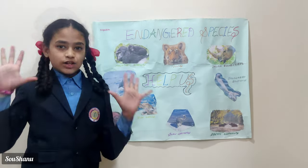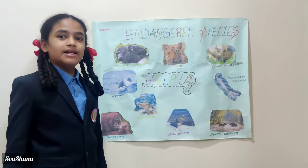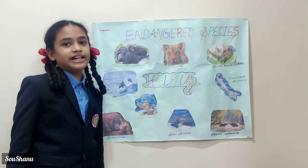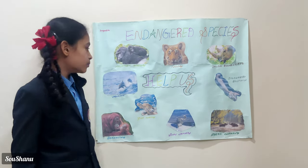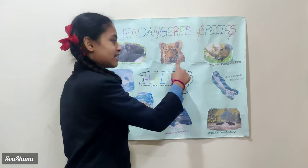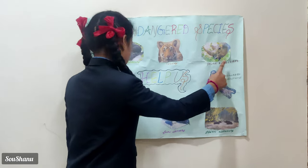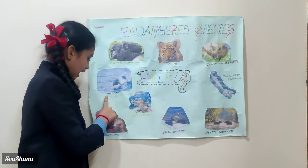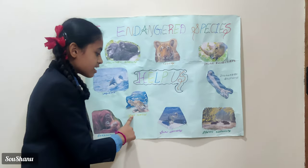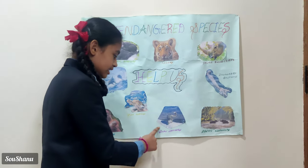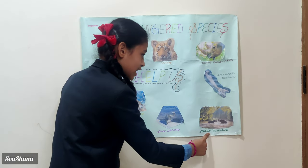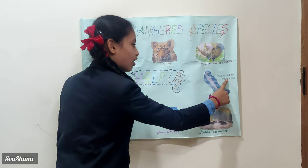These are the top 10 animals that are endangered in 2022: mountain gorillas, tigers, rhinoceros, vaquita, orangutan, sea turtle, snow leopard, Asian elephants, and dolphins.